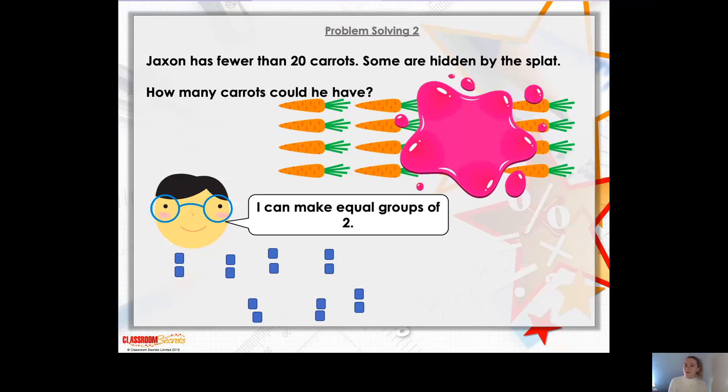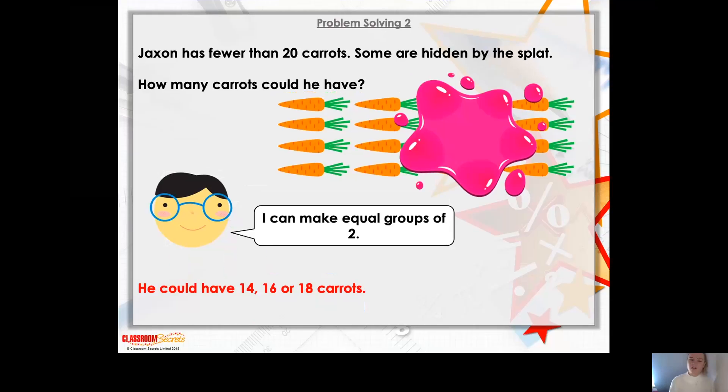18? Yes, you can, because 18 is an even number. And what about 19? No, because 19 is an odd number too. OK, well done. So as I said, he could have 14, 16 or 18 carrots.